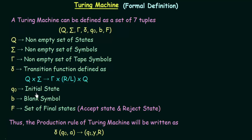Then we have Q0, which is the initial state or the starting state. Then we have B, which is the blank symbol. In the tape, we have a special kind of symbol known as the blank symbol, which is used for filling up the empty spaces in our tape sequence. This blank symbol does not belong to the set of input symbols, which is why blank is a special symbol and has a different tuple B to denote it.